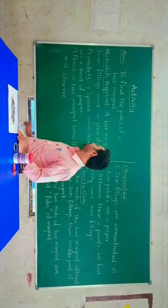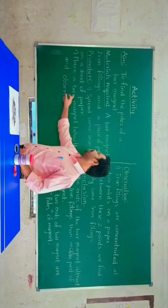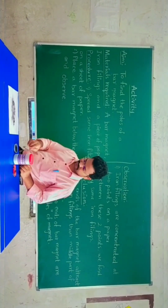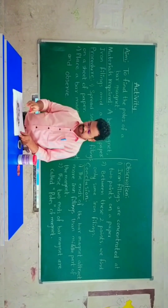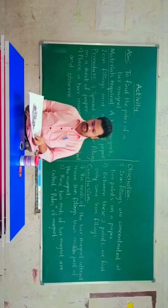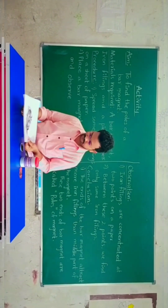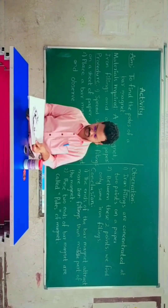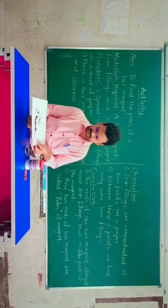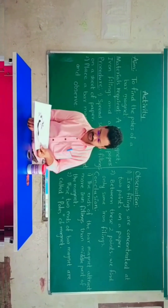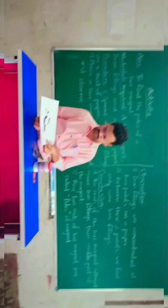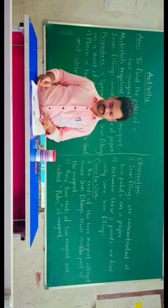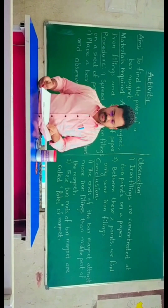I have spread some iron filings on a sheet of paper. Now I am going to place a bar magnet below the sheet. This bar magnet is placed below the sheet. You can see the result.